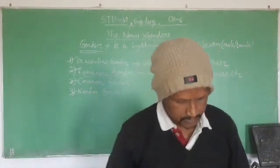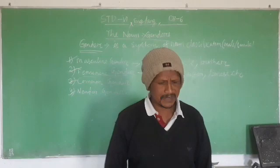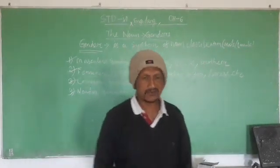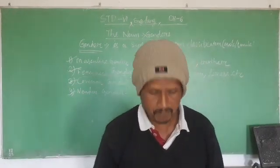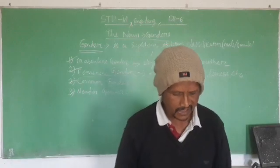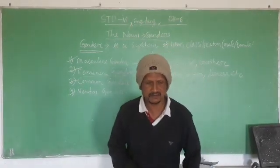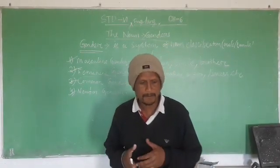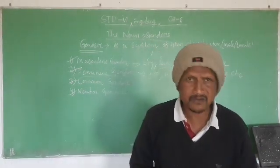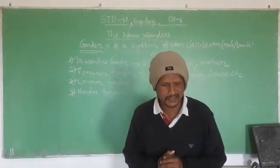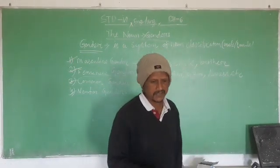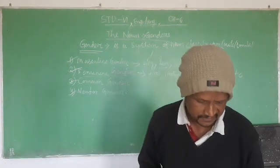Now, some other examples of masculine and feminine gender are: husband, lion, man, grandfather — these are the male ones, so these are called masculine gender. Wife, lioness, woman, grandmother — these are called the feminine genders.